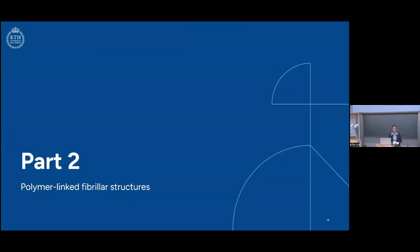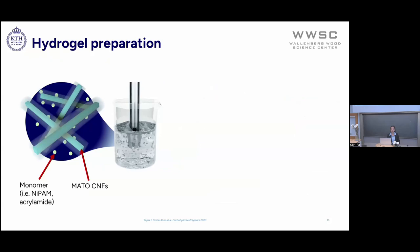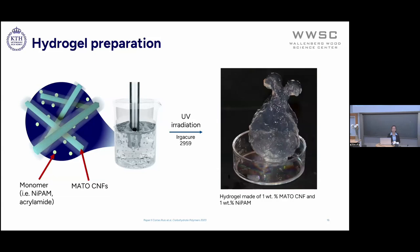For this project, we use polymer-linked fibrillar structures, and for this we use a special type of CNFs — cellulose nanofibrils. We used TEMPO-oxidized methacrylated CNFs. They will have colloidal stability thanks to the carboxylic content, and they will also have good reactivity thanks to the alkene groups in the methacrylates. To make a gel, we combined the CNFs with some monomer. We started with small molecules like acrylamide, introduced some initiator, applied light, and obtained a nice-looking hydrogel.